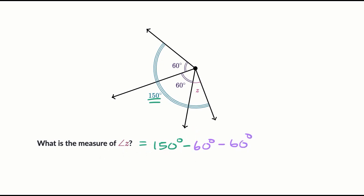So this is going to be equal to 150 degrees minus 60. And if I subtract 60 twice, that's the same thing as subtracting 120 degrees. And so that is going to be equal to 150 minus 120.